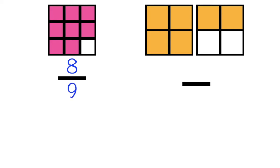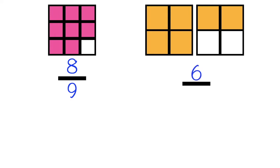How about the fraction on the right side? Let's count the shaded parts: 1, 2, 3, 4, 5, 6. We have 6 shaded parts, so that means our numerator is 6. How about the denominator? What is the denominator here? That's correct, children! It is 4, since we have 4 equal parts.